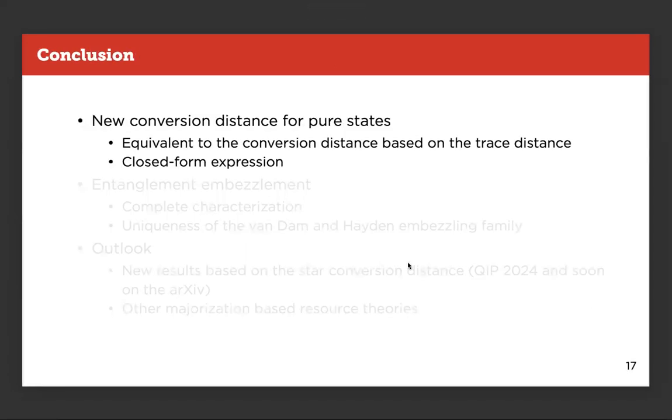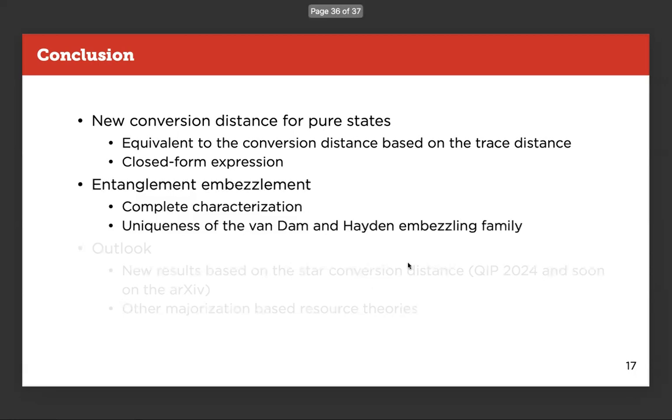To conclude, what we did was to introduce a new conversion distance that works for pure states. It's equivalent to the standard one based on the trace distance. But we were able to find a closed form expression. And that's quite interesting because LOCC is usually tricky to deal with. And so we were happy to find this closed form expression. Then we used this result for entanglement embezzlement. We provide a complete characterization in a sense that if one gives us a family of states, we are able to tell if it's an embezzling family or not. And we showed that under reasonable assumptions, the Van Dam and Hayden family is unique. So everything that is embezzling has to be very close to Van Dam and Hayden.